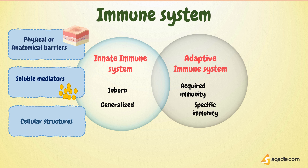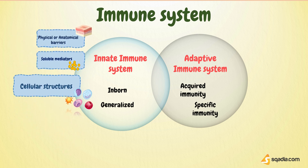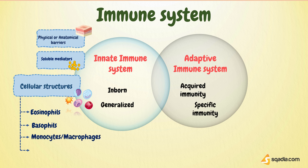Some cells of the innate immune system reside in tissues and organs of the body, ready to respond when a pathogen infects that tissue. Cells that are mainly involved in innate immunity are white blood cells — that are eosinophils, basophils, monocytes, which later become macrophages, and neutrophils.